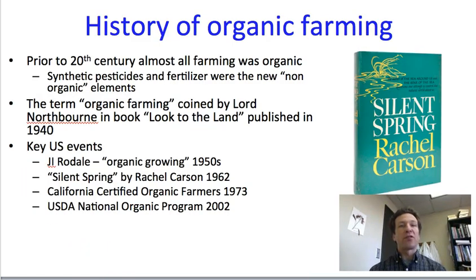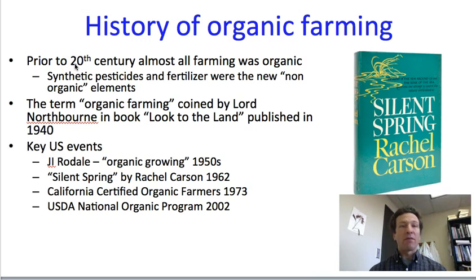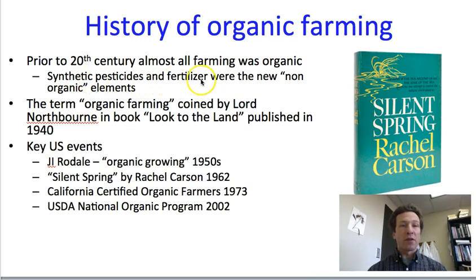Before the 20th century, so prior to the 1900s, all farming was basically organic. This was because synthetic pesticides and fertilizer had not been invented yet. Then during the 1940s and after especially, we increasingly developed first synthetic fertilizers and then synthetic pesticides. So these were the new non-organic elements of farming.